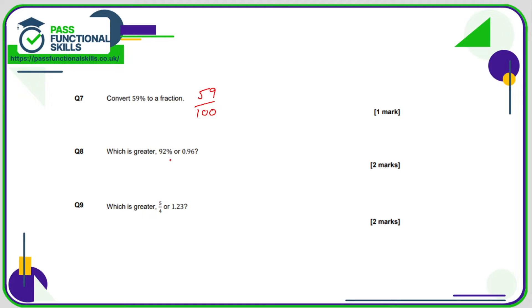Question number eight. Which is greater, 92% or 0.96? My recommendation would be to convert either the 92% to a decimal or the 0.96 to a percentage. Now I think it's easier to convert the 0.96 to a percentage because that involves multiplying by 100, whereas the 92% to a decimal involves dividing by 100 and in my experience people prefer to multiply than divide.